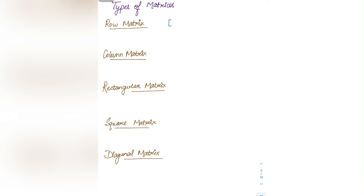Next we have the types of a matrix. The first type is a row matrix — a matrix written in the form of a single row. For example, [4, 5, 0] has a single row, so it is called a row matrix. The second type is a column matrix — a matrix that has a single column is called a column matrix.